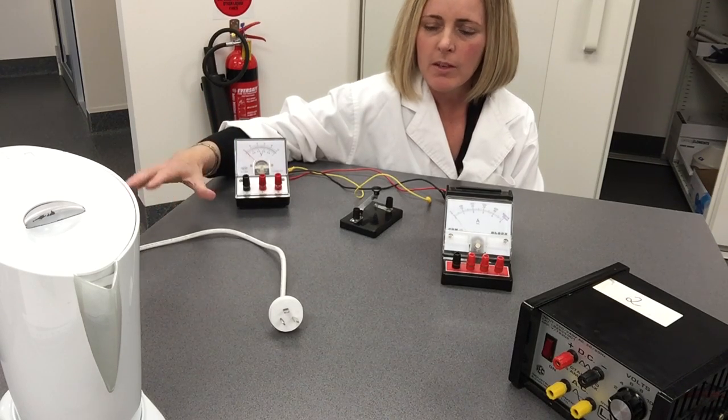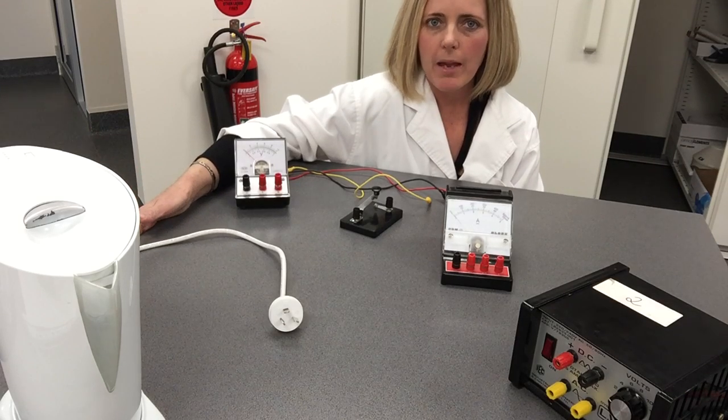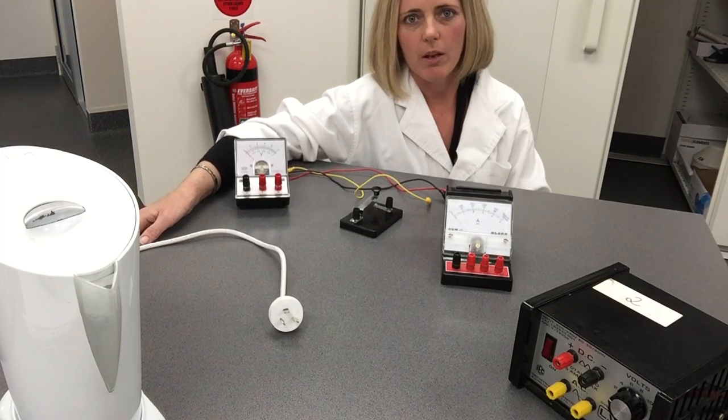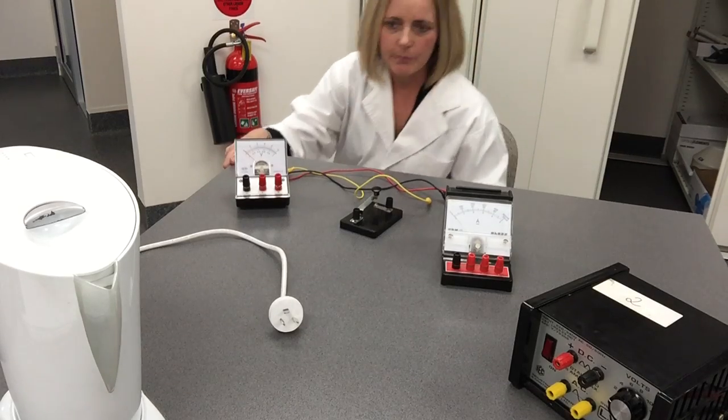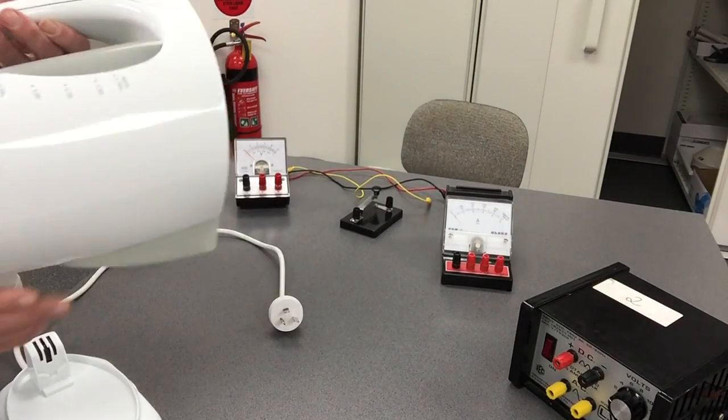One of the things to remember is that to work out power, power is equal to current times voltage. So you will be setting up a circuit for checking your kettle.